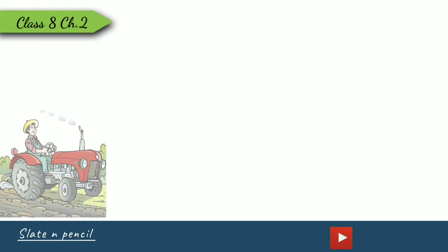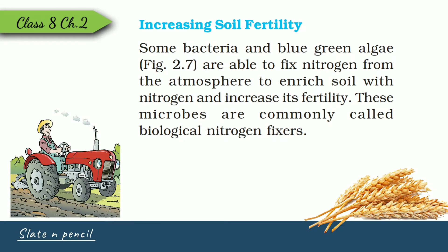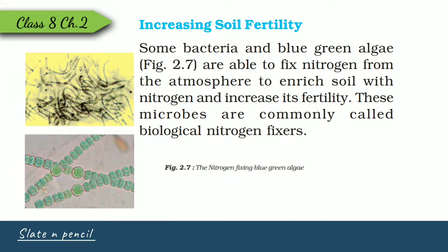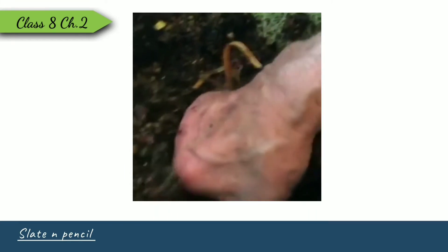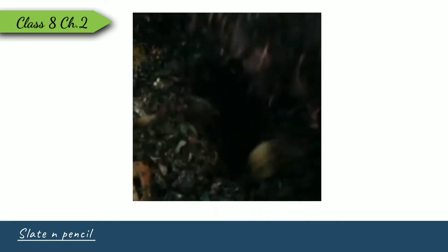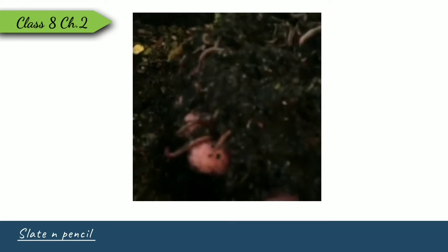In the farming sector, microorganisms are used for nitrogen fixation, which increases soil fertility. Some bacteria and blue-green algae fix nitrogen and are called biological nitrogen fixers. Farmers also produce manure with the help of microorganisms — dead and decaying organic matter is processed by microorganisms, which decompose and convert it into manure.